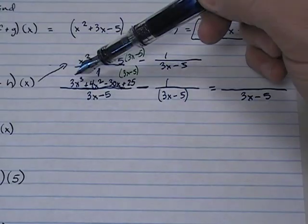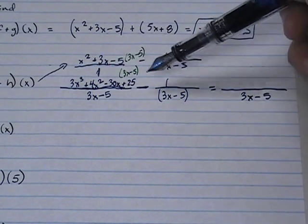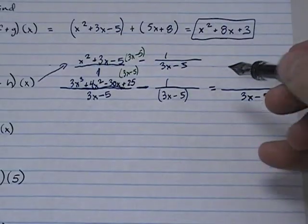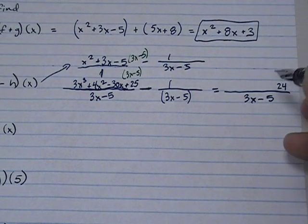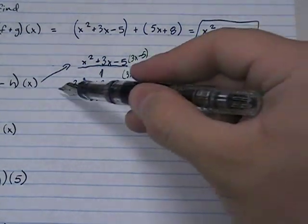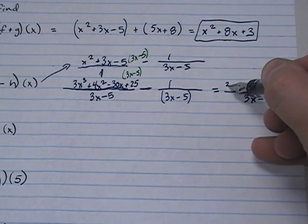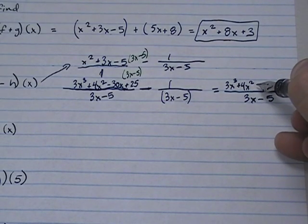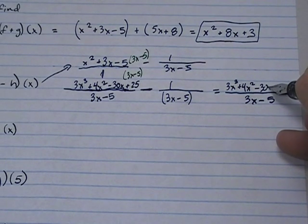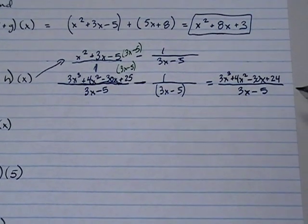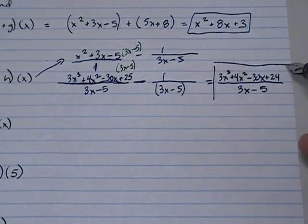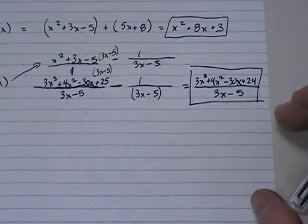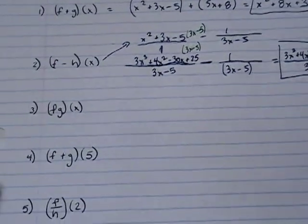The numerators are real simple. You take this numerator minus that numerator. Like terms, you've got 25 minus 1, you get 24. What about the rest of this? There's no like terms, so it gets copied. 3x to the third plus 4x squared minus 30x plus 24 over 3x minus 5. And that is f minus h of x.